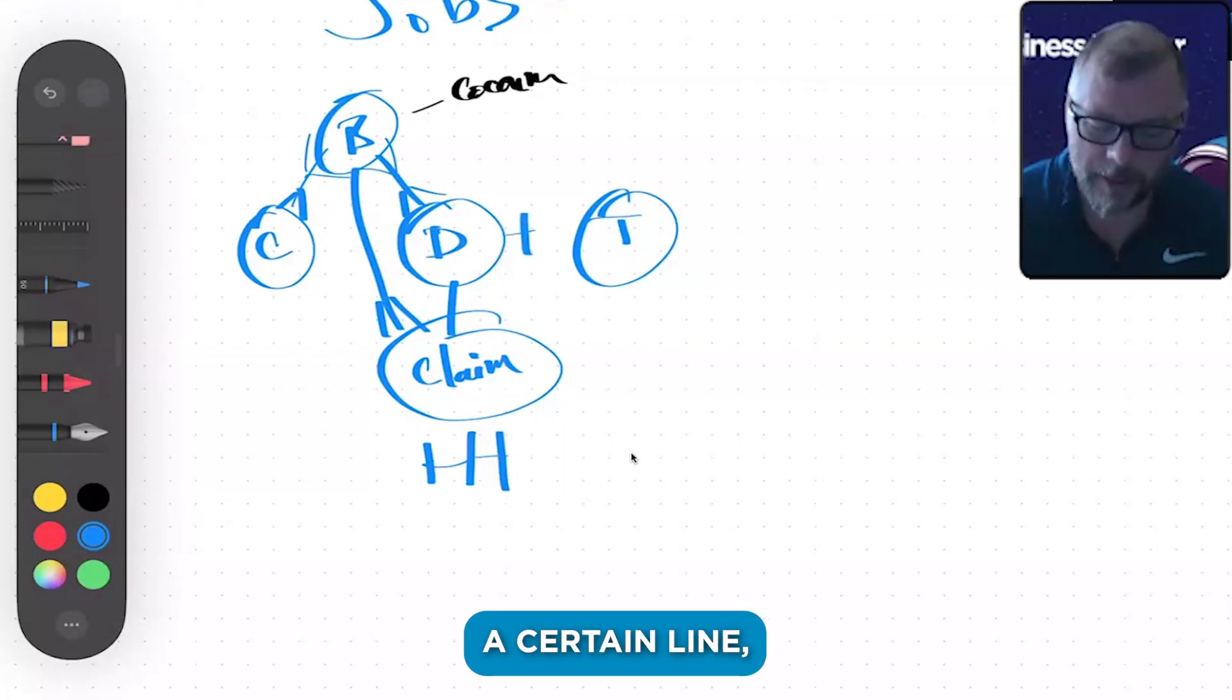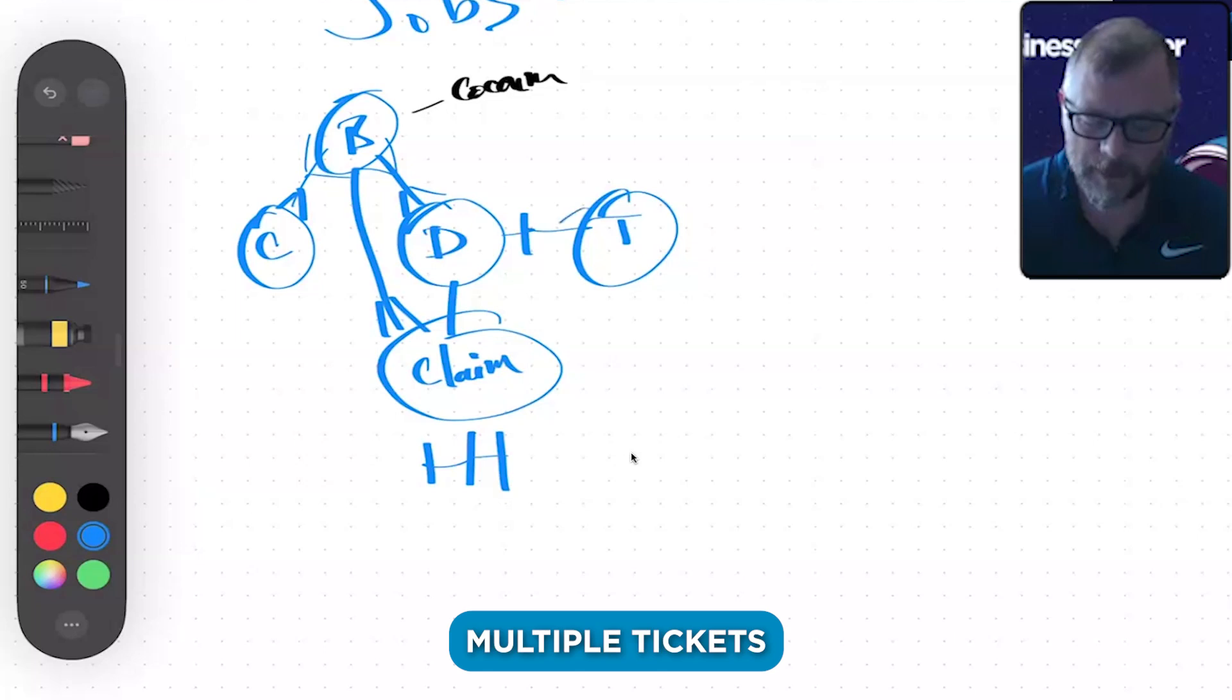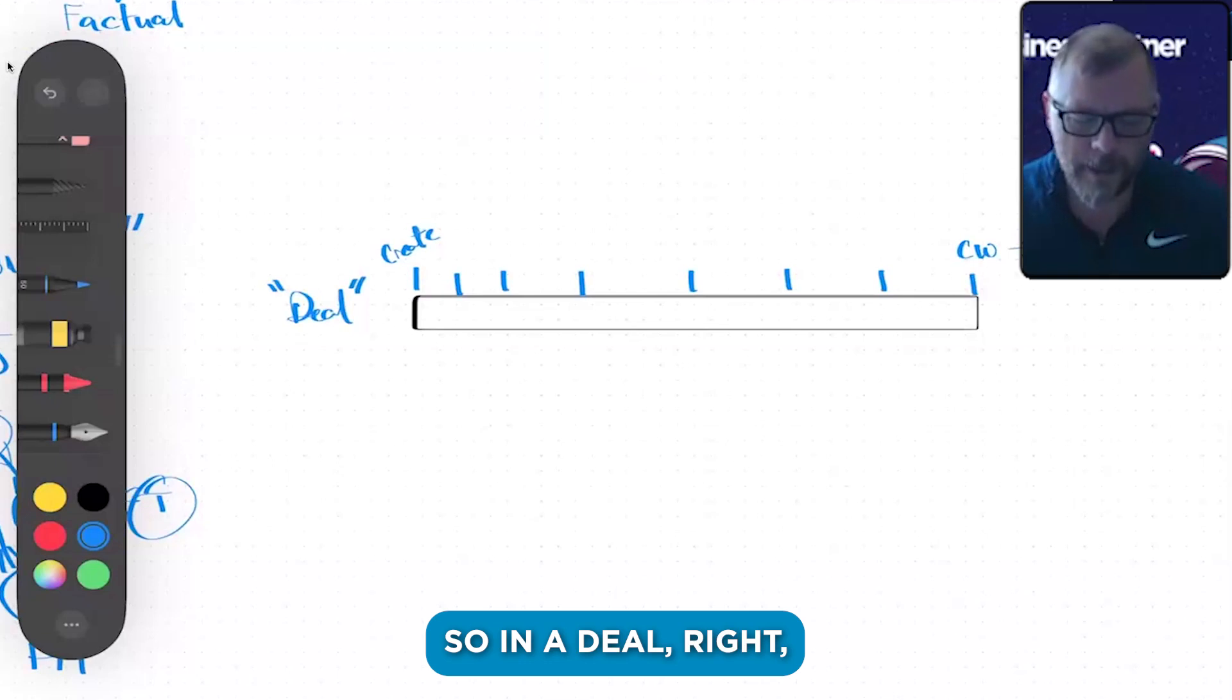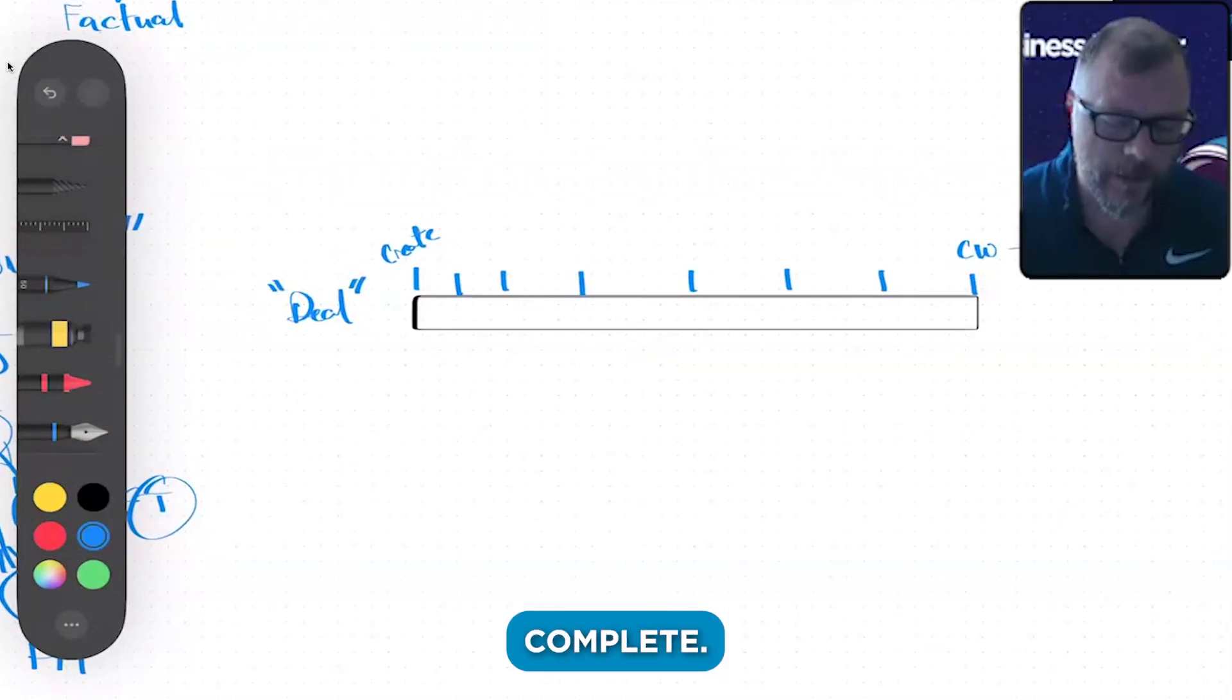Then once you sell a deal, so once the deal passes a certain line, it becomes a ticket. And a deal could have multiple tickets because you could be doing roofing and gutters and siding. So you would essentially have multiple tickets. So in a deal, you're going to have several stages. You're going to have the inspection complete, and then you're going to have the contract sent, and then you're going to have the contract signed.